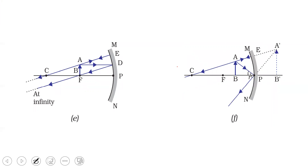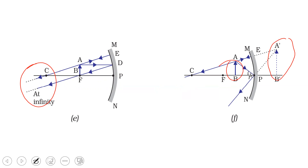When the object is placed at the focus F, the image forms at infinity. The reflected rays are parallel, and the image is real, inverted, and highly enlarged. When the object is placed between F and P, the reflected rays are diverging, which means the image is virtual, erect, and enlarged, and the position is behind the mirror.